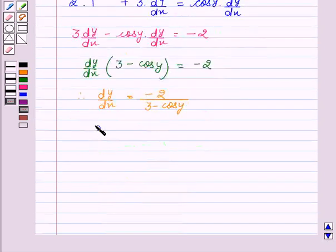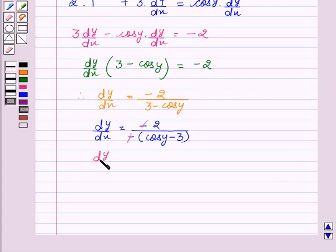Now, dy/dx equal to minus 2 upon, on taking minus common we get (cos y - 3). We see that minus minus cancel out. This gives dy/dx equal to 2 upon (cos y - 3).